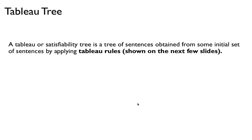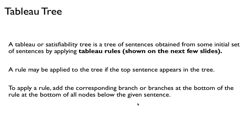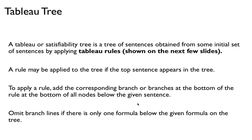So let's talk about this tableau tree, or the satisfiability tree. It's basically a tree of sentences obtained from some initial set of sentences by applying tableau rules. A rule can be applied to the tree if the top sentence of the rule appears in the tree, creating branches that go down. To apply a rule, we add a branch or branches at the bottom below the given sentence. We also omit branch lines if there's only one formula below the given formula.